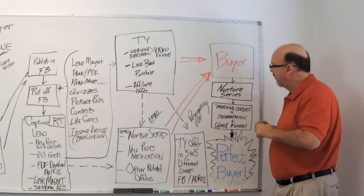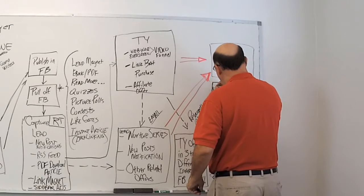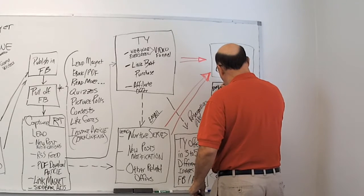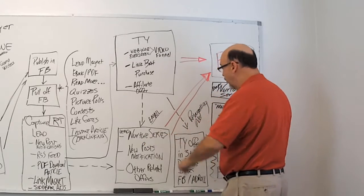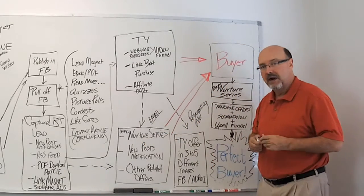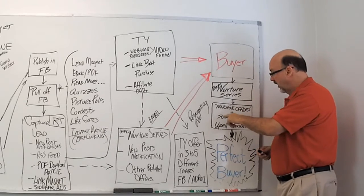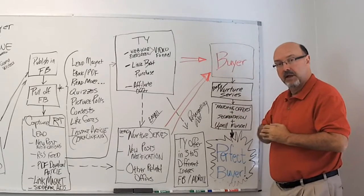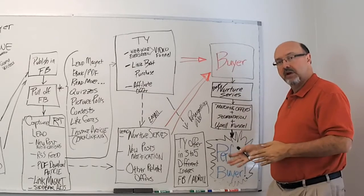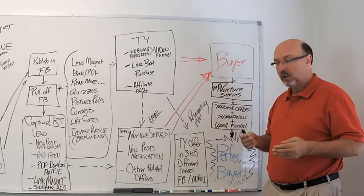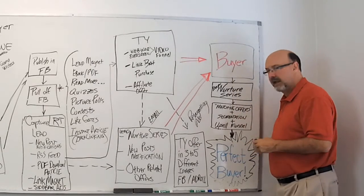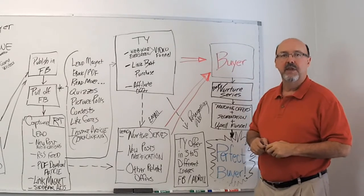Now, once they become a buyer, they go into a different series. I'm going to take them out of my lead nurture series, move them over to my buyer nurture series where I'm going to be sending them matching offers. I'm going to try to segment them, meaning what are they more interested in? I may use quizzes and polls to do that. And I'm going to give you a for instance.